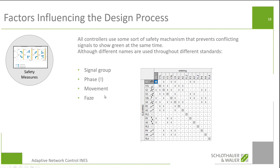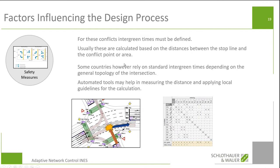What we end up with in the end is conflicts between signal groups in a matrix. We have to fill this matrix — or make a second matrix — with intergreen times for these conflicts. Intergreen times must be defined; they are usually calculated based on the distances between the stop line and the conflict area, with an entering vehicle and a clearing vehicle. But not everywhere — there are still some countries that rely on standard intergreen times, saying that for a four-leg intersection with certain lane counts, you operate with a standard intergreen time of X seconds. What you want is an automated tool that can help you calculate these distances and make a calculation based on the guidelines.